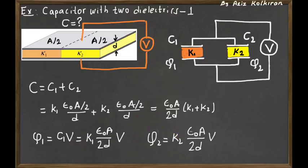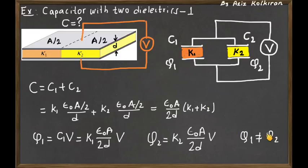The larger the dielectric constant, the larger the charge on the plates. So even though these plates are at the same potential, that does not necessarily mean they will have the same charge. In fact, if they have different materials in between the plates, they will always have different charges on the plates.